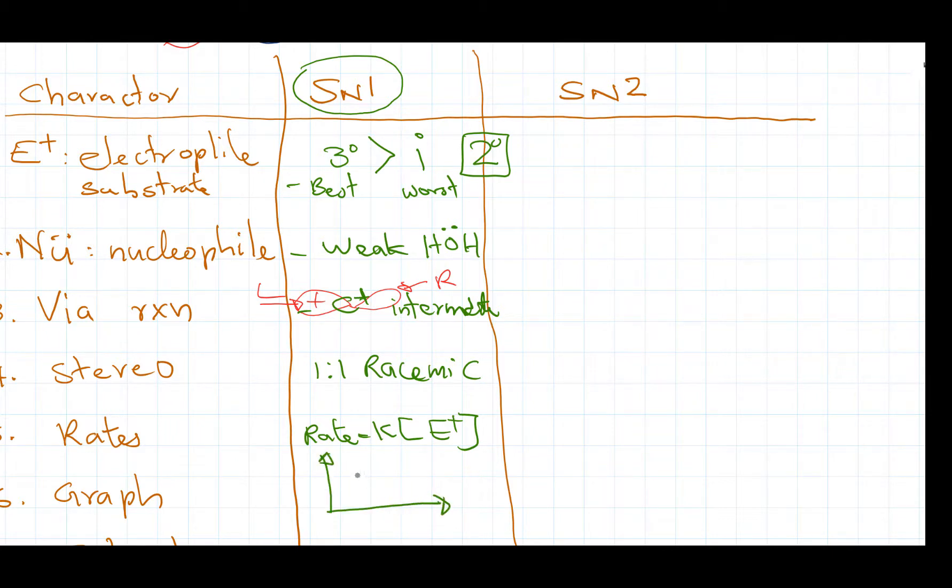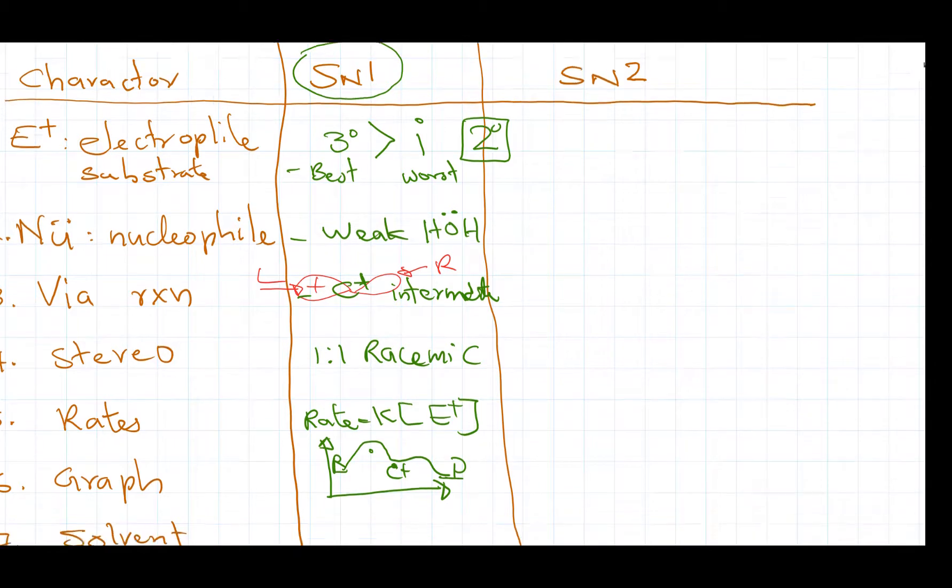And the graph should look like, as I mentioned, it should look like an elephant and the C plus, the carbocation where a man can ride. The trunk front is the reactant and the tail end is the product. So remember that way it's easier and it has two bumps.